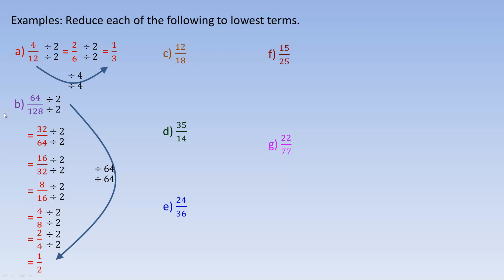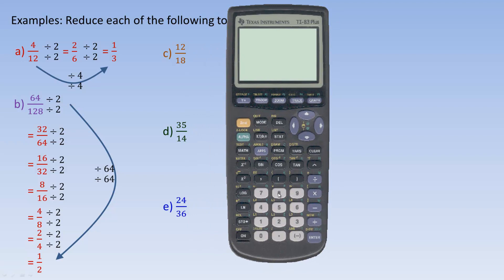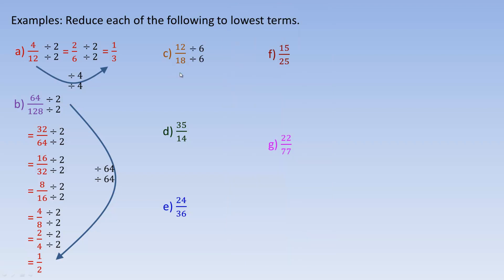For 12/18, if your times table isn't the greatest, you might divide by 2 to get 6/9. But those both divide evenly by 3. Since you divided by 2 and then by 3, that's the same as dividing by 6. So dividing 12 by 6 gives 2, and 18 divided by 6 gives 3 — so 2/3 is the lowest terms for 12/18.